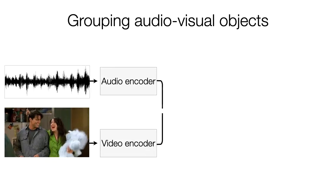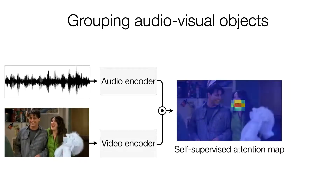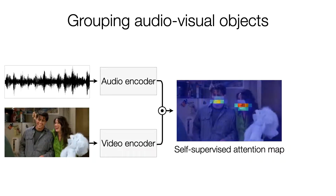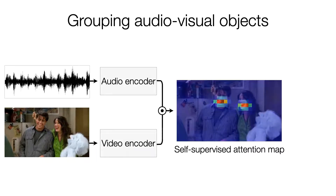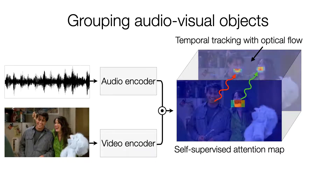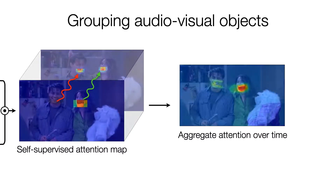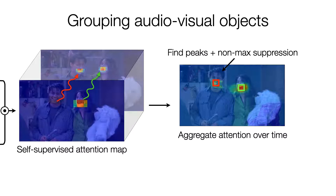Given a video, our model first produces an audiovisual attention map which highlights the location of sound sources in every frame. We use optical flow to temporally track pixels over time and then aggregate the attention over the pixel trajectories. This results in a two-dimensional map which contains a score for every pixel trajectory, representing how correlated it is to the audio over the duration of the clip. We finally determine the peaks of this map using non-maximum suppression.